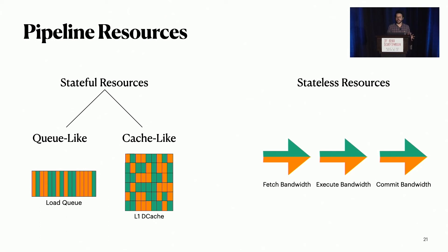On the other hand, stateless resources — such as execution units or fetch bandwidth — that are unused in a given cycle will simply be wasted. The beauty of Asymmetric SMT is that if you apply it to stateless resources, you don't even need to return a borrowed resource. If a stateless resource is not used, you can just borrow it without any consequences.